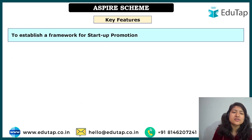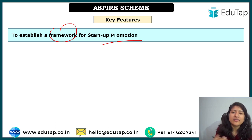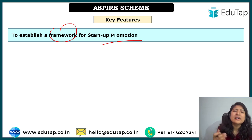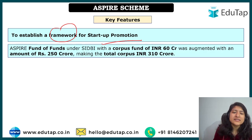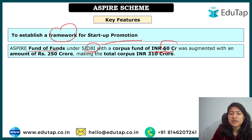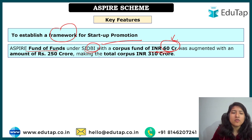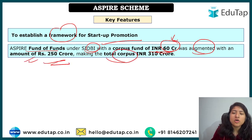The SIDBI component focuses on establishing a framework for startup promotion — particularly providing funding such as angel investment. Initially, a Fund of Funds under SIDBI had a corpus of ₹60 crore to assist new startups with capital. This has since been augmented — meaning additional funds were added — bringing the total corpus to ₹310 crore (an addition of ₹250 crore), reflecting the scheme's extension and modification.